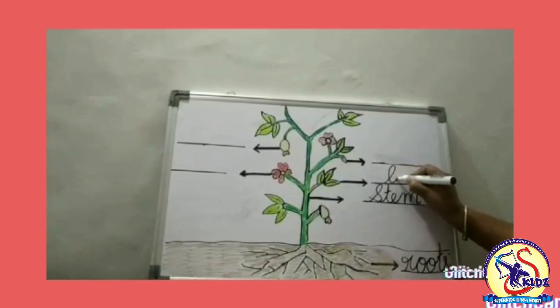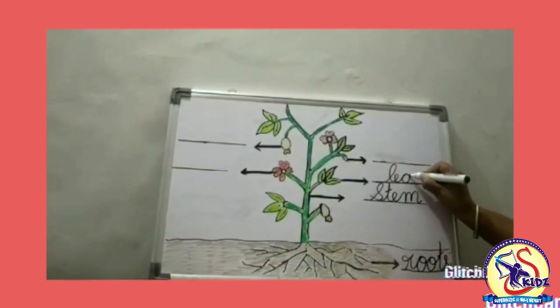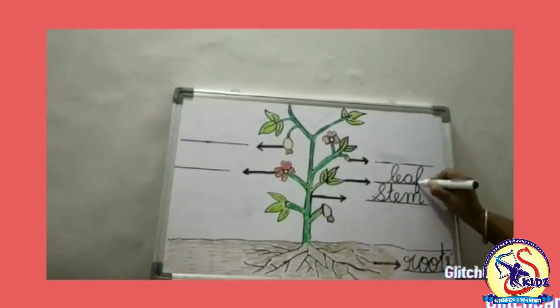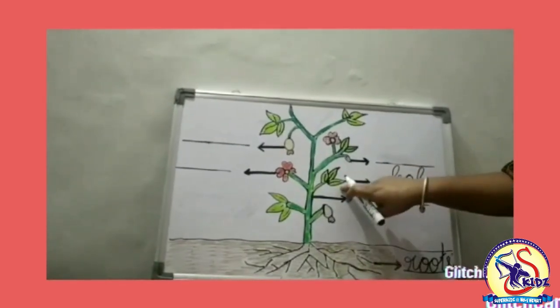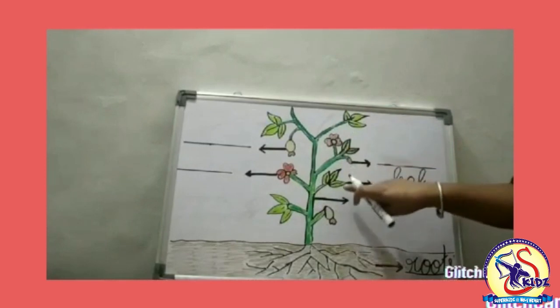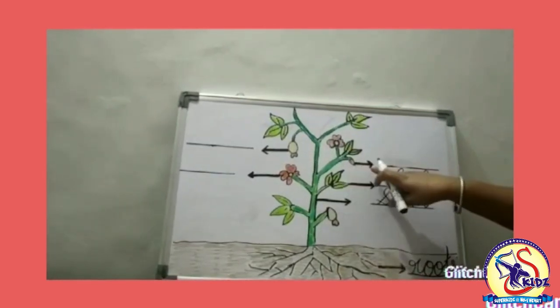Now the next part, leaf. Spell leaf: L-E-A-F. Leaf is a green part of a plant where plants make food.